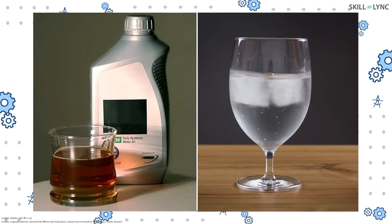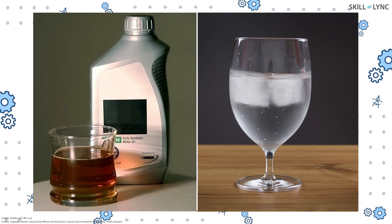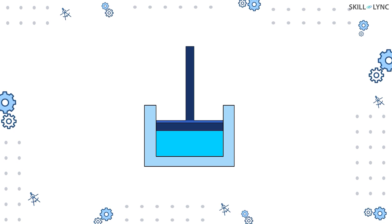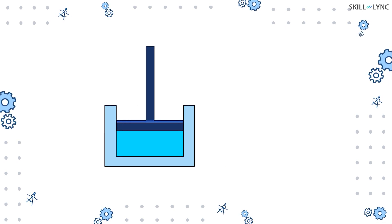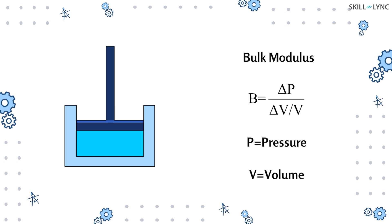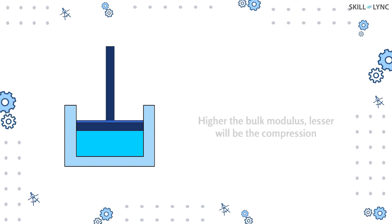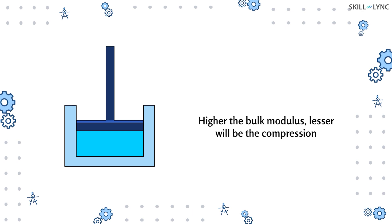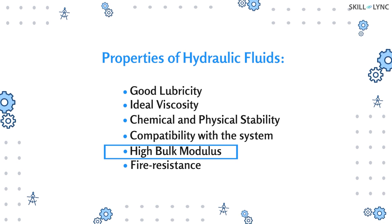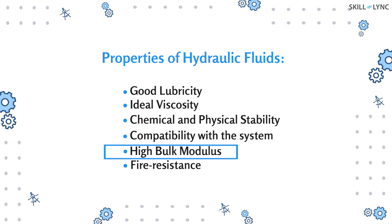As we have seen in our previous videos on fluid power, most liquids like oil or water are considered incompressible, although in practice all materials are compressible to a certain extent. The bulk modulus of a liquid is the measure of compression with an increase in pressure. A material with high bulk modulus will undergo lesser compression as compared to a material with low bulk modulus. Therefore, the hydraulic fluid must have a high bulk modulus for proper working.